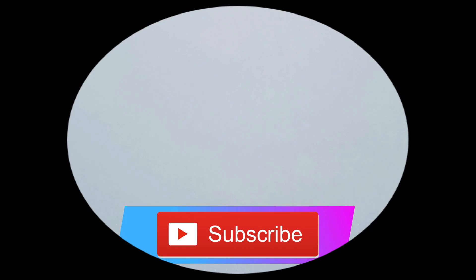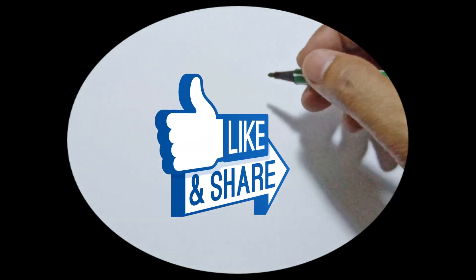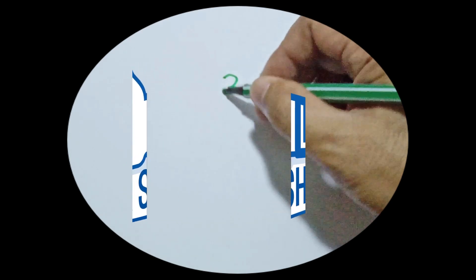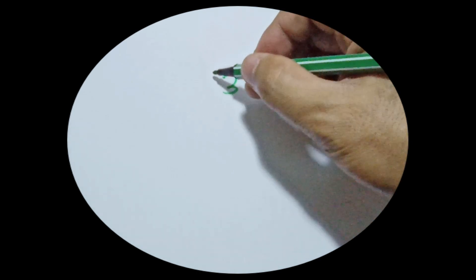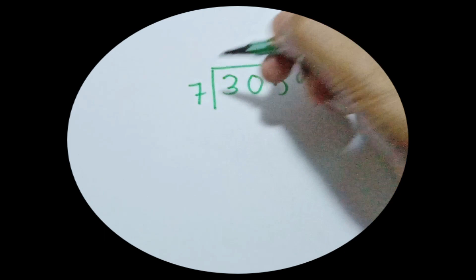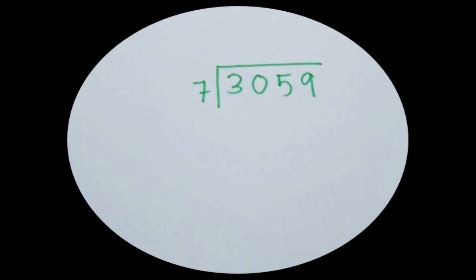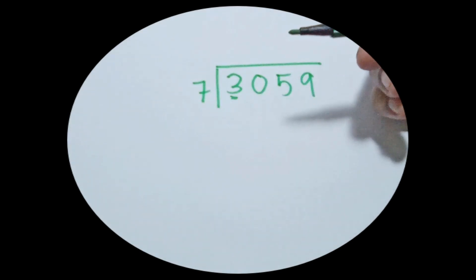In division of whole numbers using the short method, for example if you have 3059 divided by 7. So if we divide the first digit 3 by 7, which is impossible.